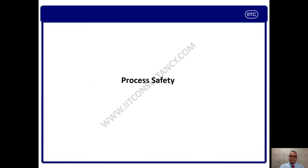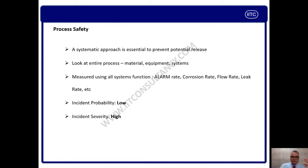Let us go ahead for process safety. As you know, the definition of process safety — as per the name, it is a safety of process. Primarily, it means LOPC, loss of primary containment. Process safety is a systematic approach to prevent potential release or LOPC, loss of primary containment. It looks at entire processes, beginning from the material, equipment, systems and product. It is measured in different aspects like alarm rate, corrosion rate, flow rate, leak rate. In terms of probability, process safety events are very less, but the severity is very high.